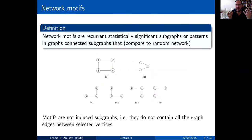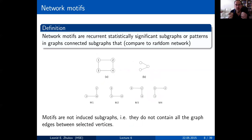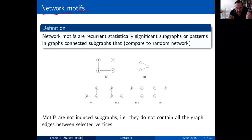We can take the dyads and triads idea and extend it to pretty much any number of nodes. There is a metric called network motifs — a recurrent, statistically significant subgraph in graphs.